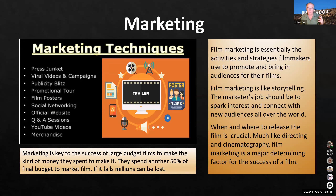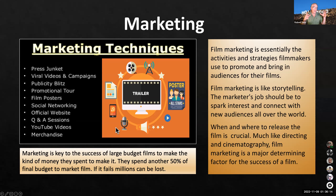Film marketing is essential — the activities and strategy filmmakers use to promote and bring in audiences. Famously, Kubrick changed the marketing for 2001 to appeal to the hippie generation of the 60s and the film took off. Film marketing is like storytelling: the marketer's job is to spark interest and connect with new audiences all over the world. When and where to release the film is crucial. You'll have press junkets, publicity blitzes, and in the stars' contracts there may be requirements to do talk shows. YouTube campaigns and influencers are also used.